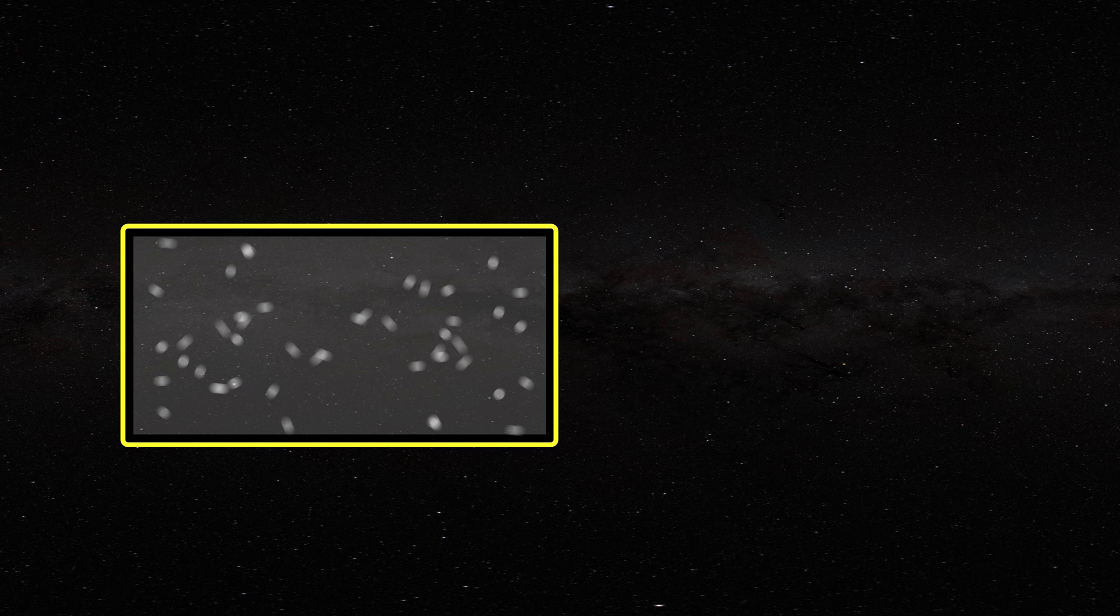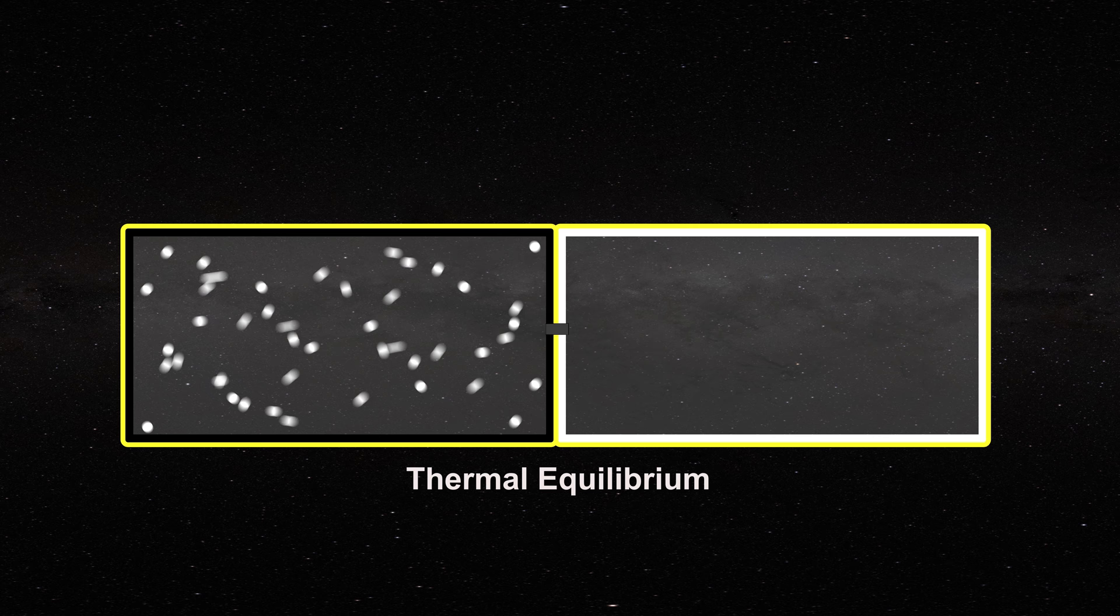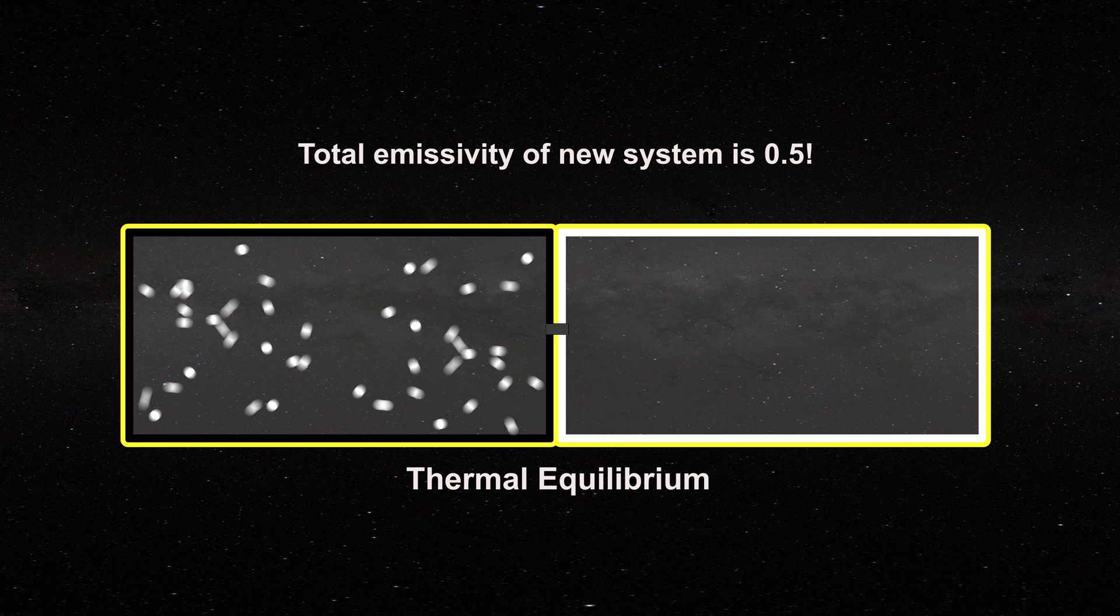We can place all the photons in the combined system on the left and all the wall energy on the right. That is very unlikely of course, but it is not forbidden. What the situation is telling us is that the emissivity of the new system is now 0.5.